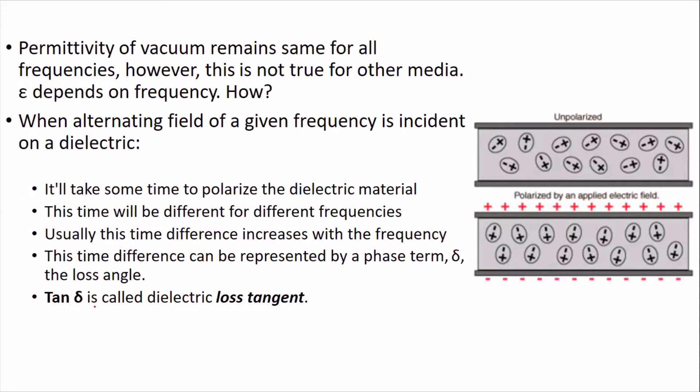For low loss materials, this tan delta is usually very small. In that case, we normally say that tan delta tends to equal delta. So the lower the value of tan delta, the lower is the loss of the dielectric material.